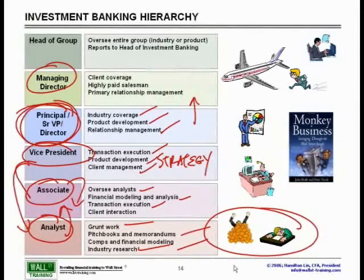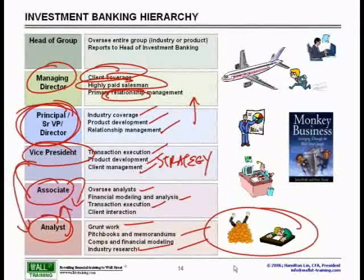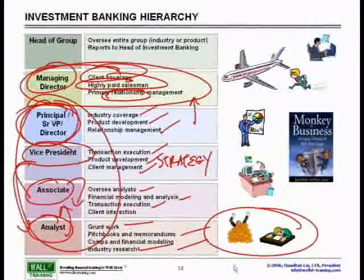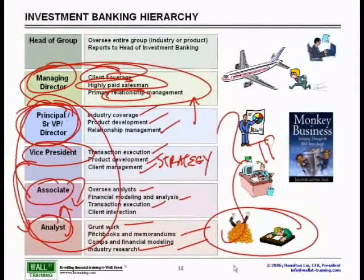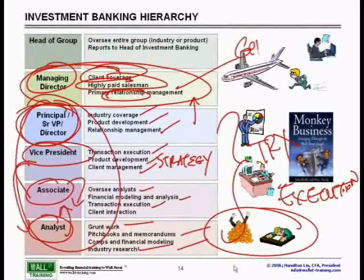At the top is the managing director, primarily responsible for client coverage — essentially a highly paid salesman with extensive relationships in their industry. The managing director is not necessarily supposed to be a finance guru; that's what the principal, VP, associate, and analyst are for. Those lower levels primarily handle transaction execution.